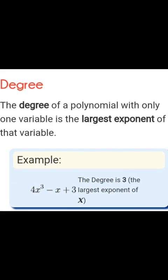Degree: the highest power of the variable is called the degree of the polynomial. The degree of a polynomial with only one variable is the largest exponent of that variable. For example, in 4x³ − x + 3, the largest exponent is 3, so the degree is 3.